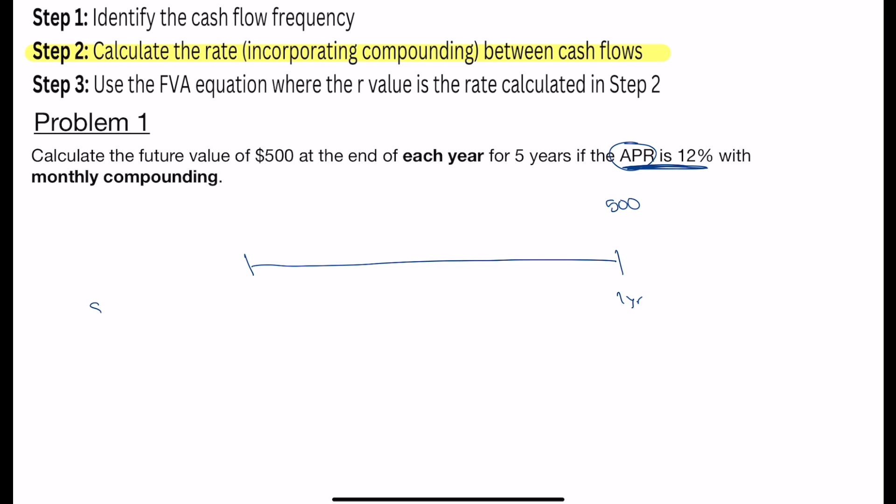Now, how do we figure out how much we're going to earn per year is we can start with the periodic rate. So the periodic rate, if you watched the previous video, you've seen it before, it's where we take the APR and we divide it by the number of compounds per year. So in this case, our periodic rate is going to end up being the monthly rate because we have monthly compounding.